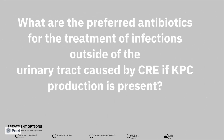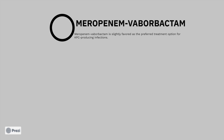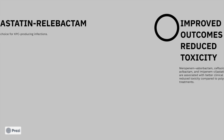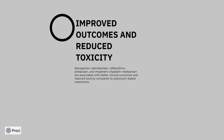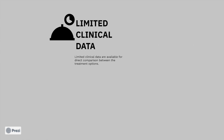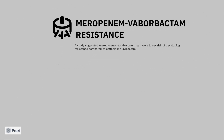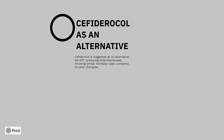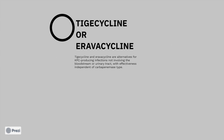For infections outside of UTI caused by KPC-producing CRE specifically, meropenem-vaborbactam is first choice, ceftazidime-avibactam is second, and imipenem-cilastatin-relebactam is third. These agents are associated with better clinical outcomes compared to polymyxin-based treatment. There is limited clinical data comparing these agents directly. Meropenem-vaborbactam resistance exists but is very low (~3%). Imipenem-cilastatin-relebactam has limited data but in vitro activity and clinical experience suggest it is likely effective. Cefiderocol is an alternative but should be reserved for severe infections. Tigecycline and eravacycline are alternatives where the infection is not in the bloodstream or urinary tract.